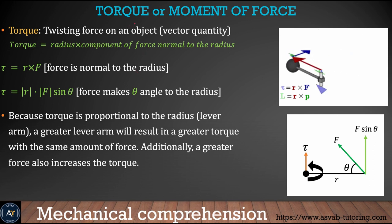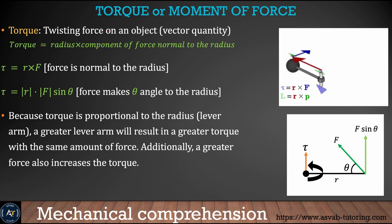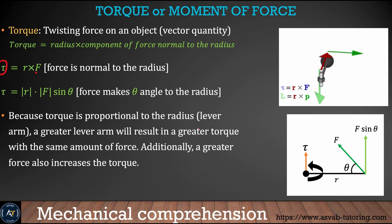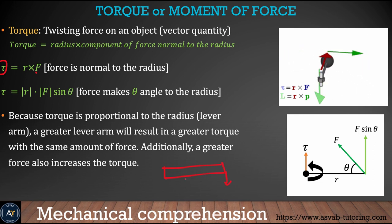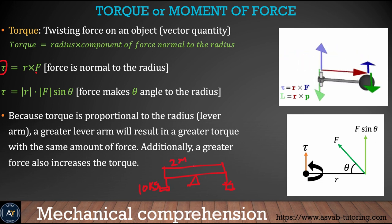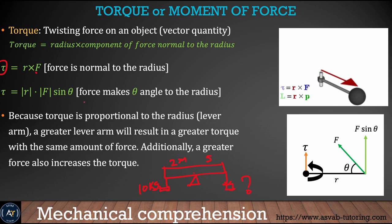The next thing we'll learn is torque. Torque is the twisting of an object, denoted as tau (τ), which equals force times the perpendicular distance. For example, if you have a 10-kilogram object hanging two meters from an equilibrium point and a distance of five meters on the other side, you can calculate the load using the torque formula to achieve equilibrium.